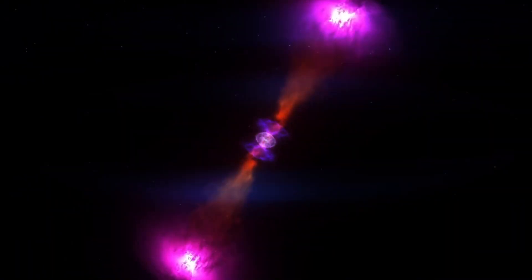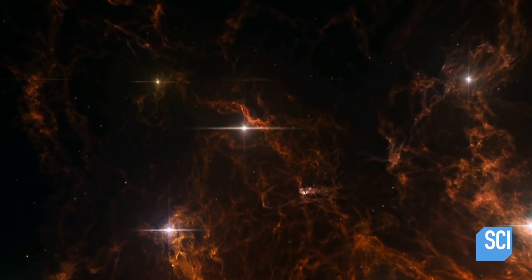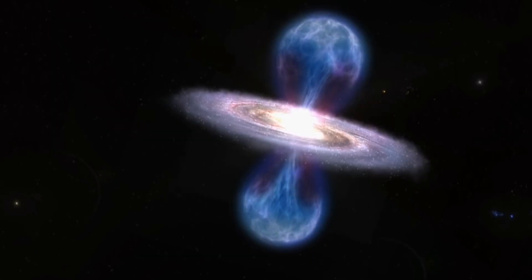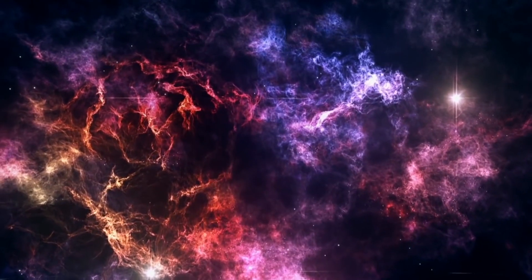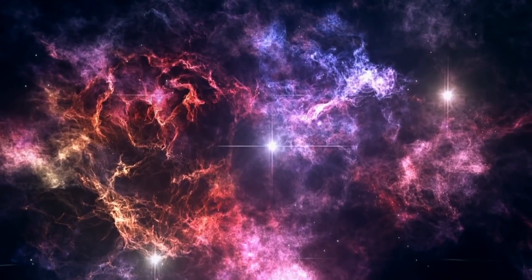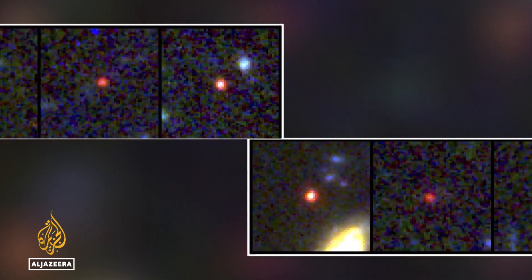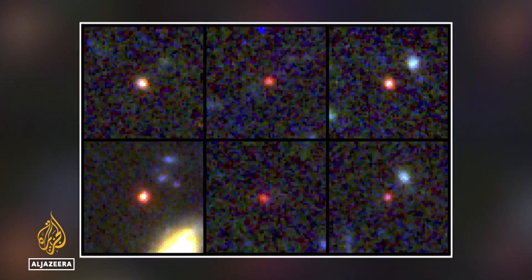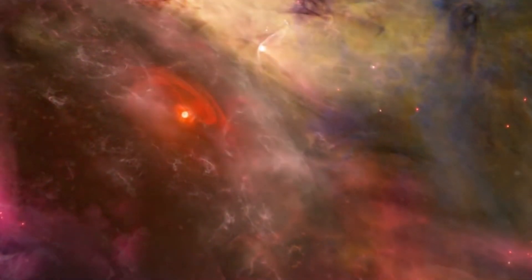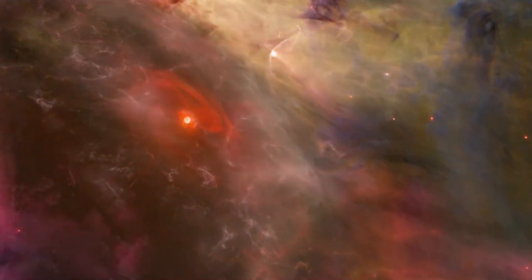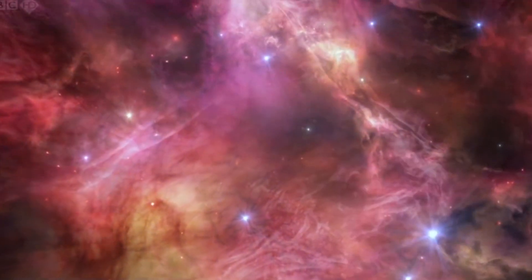But maybe it wasn't through mergers or accretion. Maybe they just formed stars naturally. After all, that does happen. The Milky Way does it too with around a star or two forming each year, on average. But this also doesn't make sense, because if these six galaxies were forming new stars to grow to such a massive size, they would need to be spawning hundreds of new stars each year throughout the entire history of the universe itself.